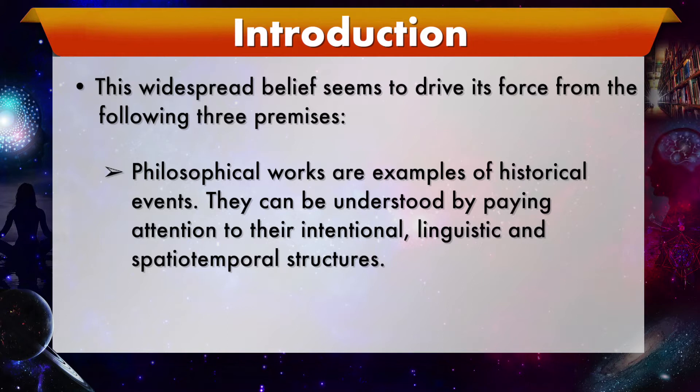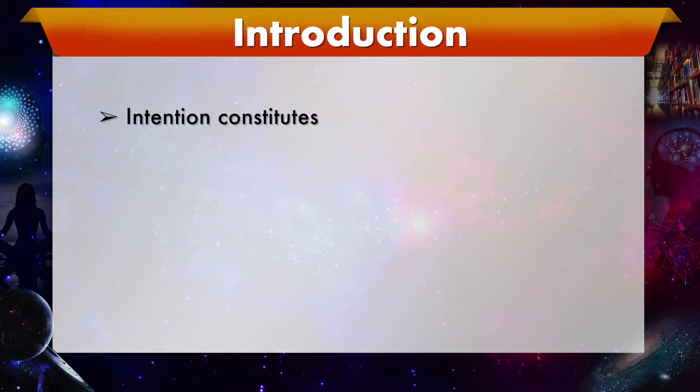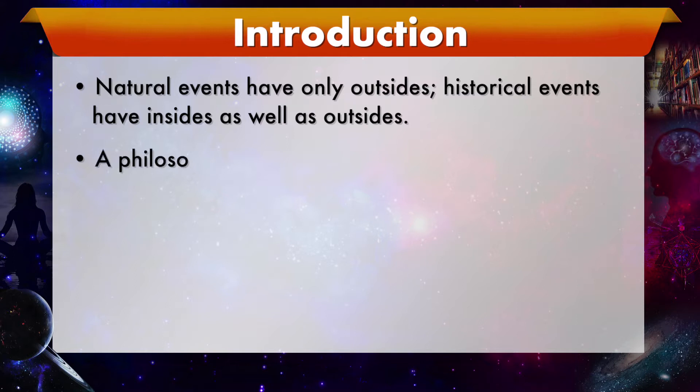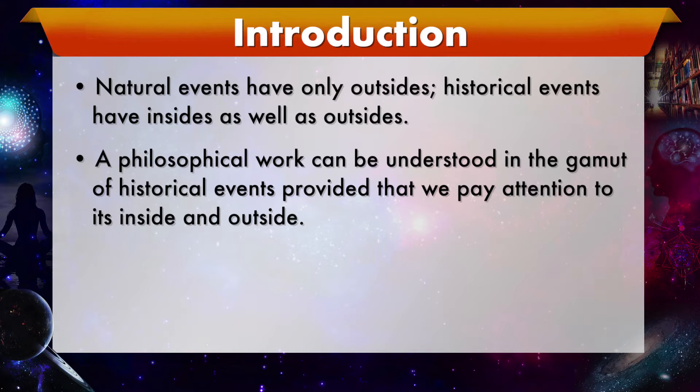First, philosophical works are examples of historical events. They can be understood by paying attention to the intentional, linguistic, and spatio-temporal structures. Intention constitutes the inside of a particular work, whereas its outside is given in terms of the latter two structures. Natural events have only outsides; historical events have insides as well as outsides. A philosophical work can be understood in the gamut of historical events, provided we pay attention to its inside and outside — this requires a non-comparative rather than a comparative method.